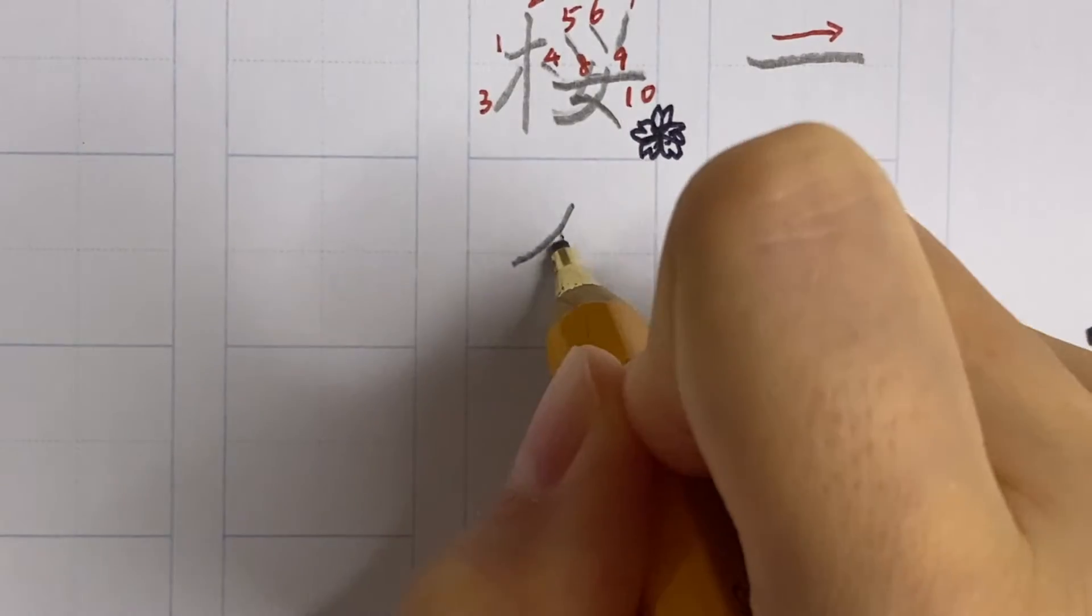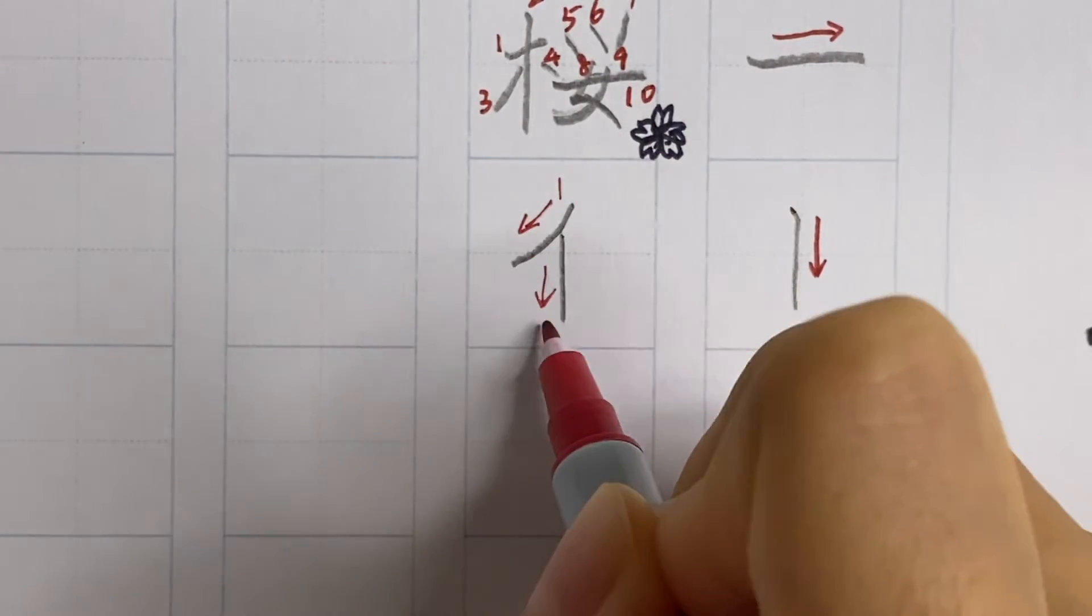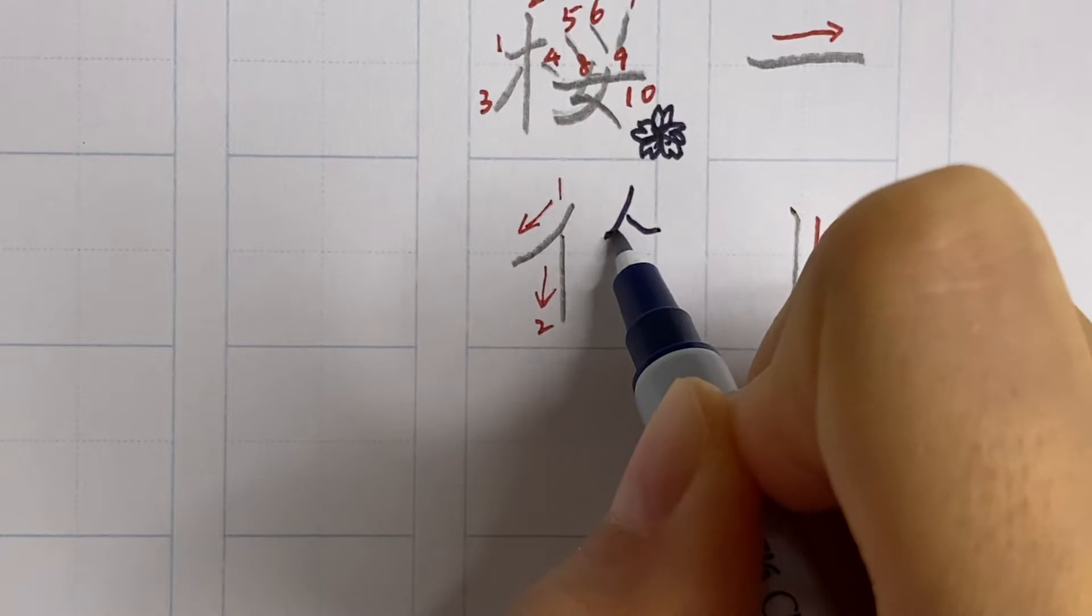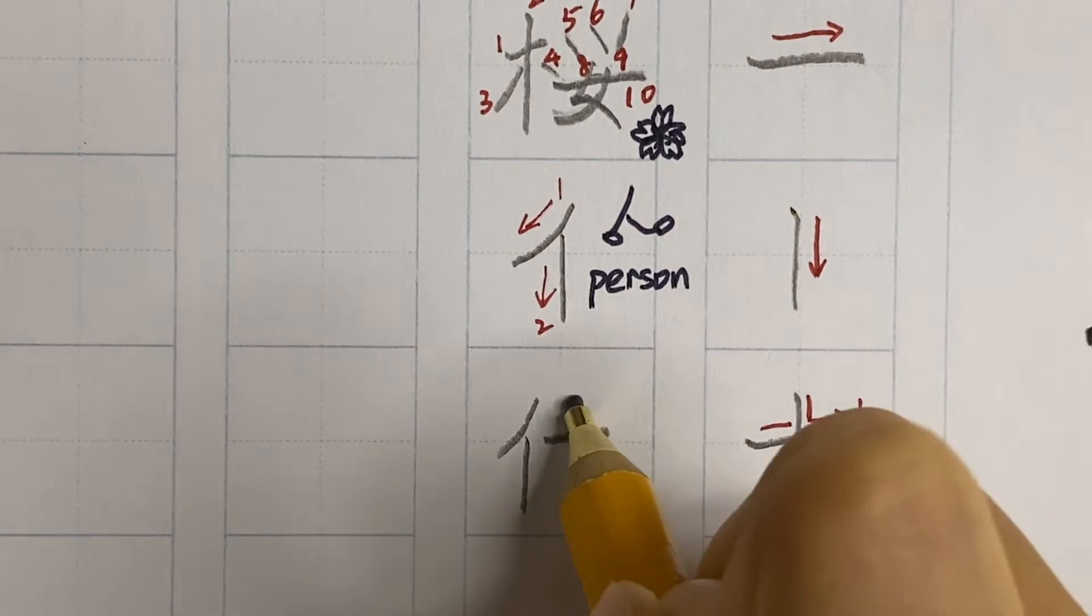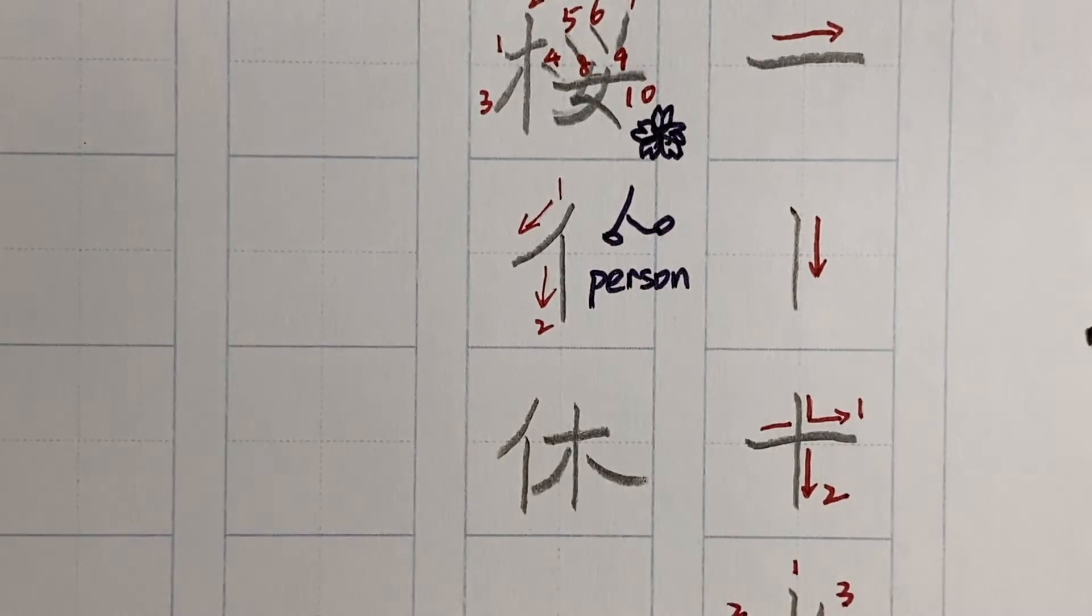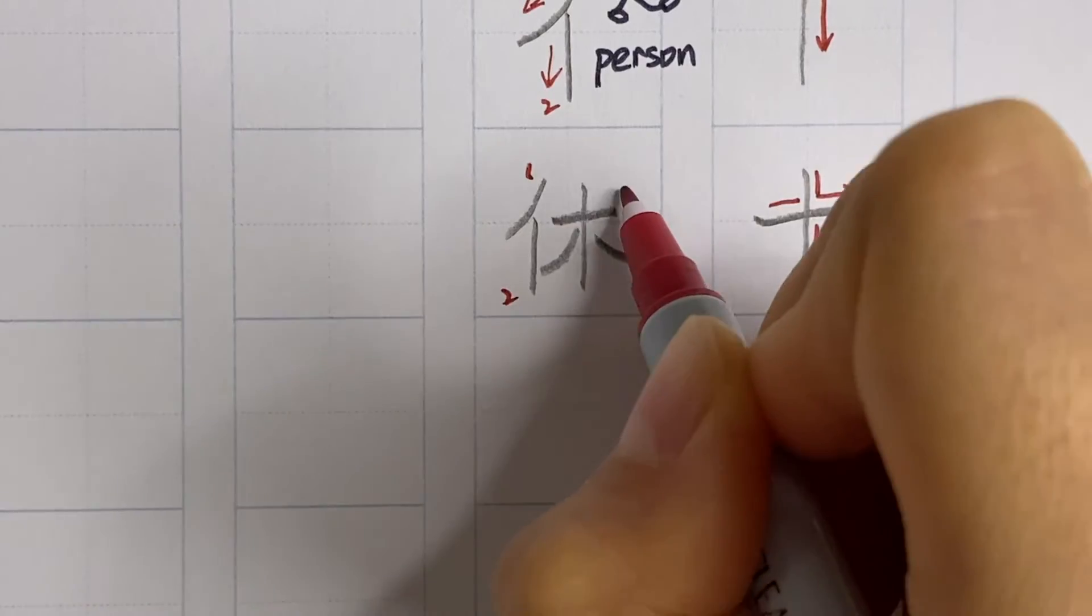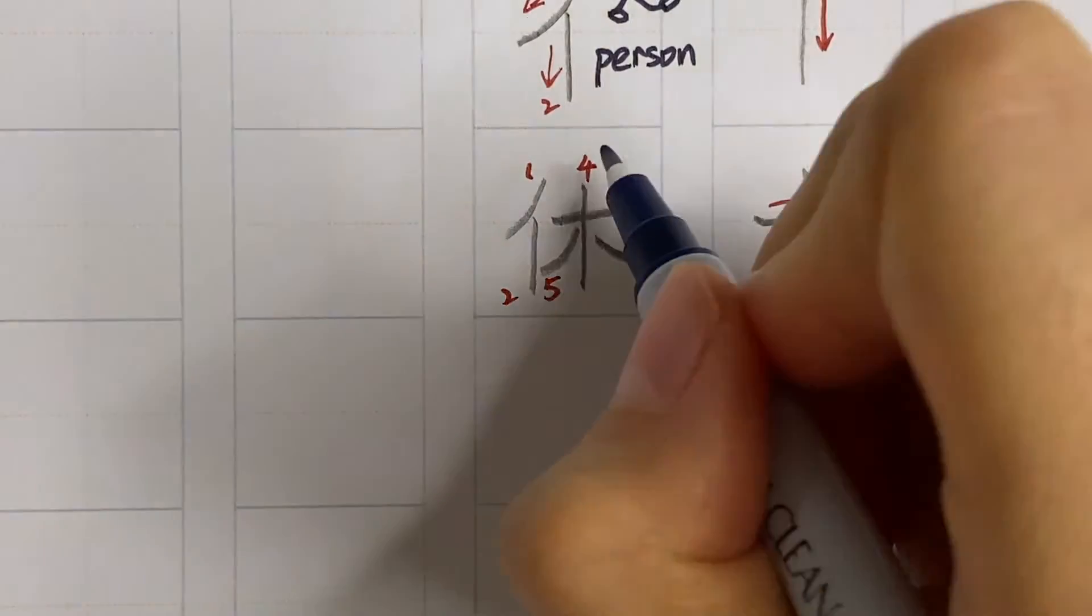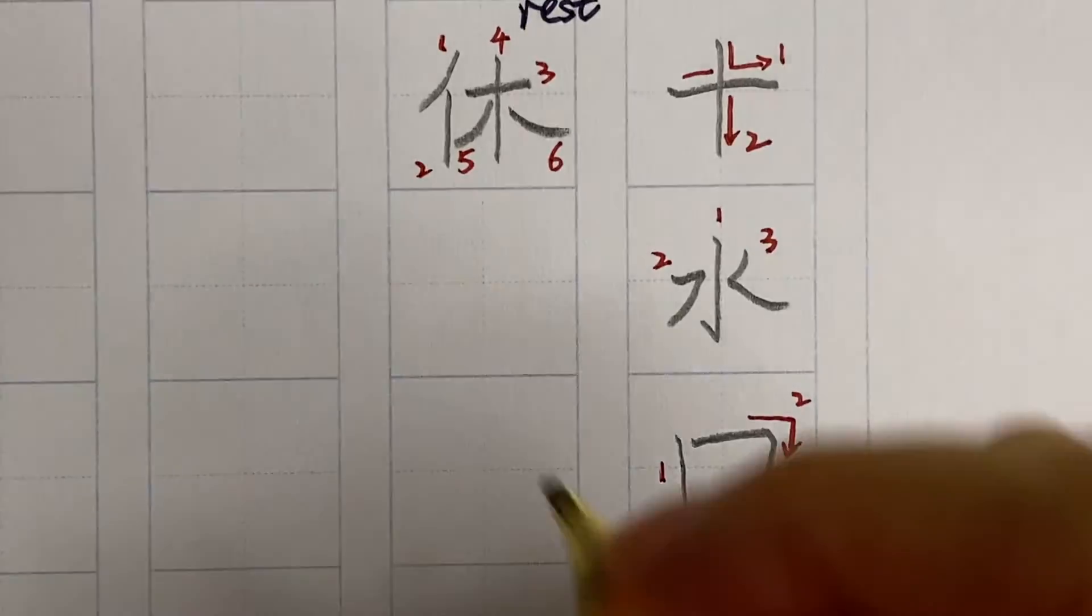The next common component looks like two legs. This means the person or people. It changes shape from kanji hito. An example kanji is this part, the person, and plus our tree. Remember the sequence from left to right, top to bottom. If it's symmetrical, we have to draw the middle part first. A person leaning on the tree is to rest. Kyujitsu, yasumu.